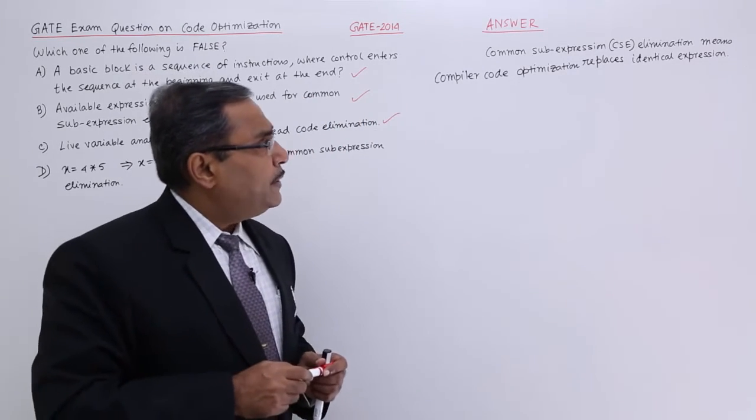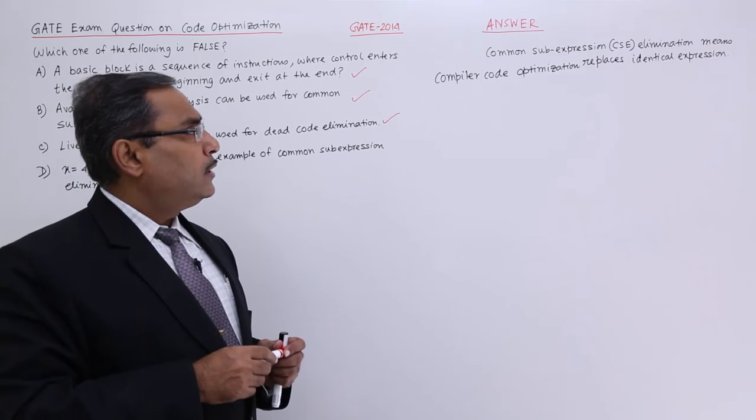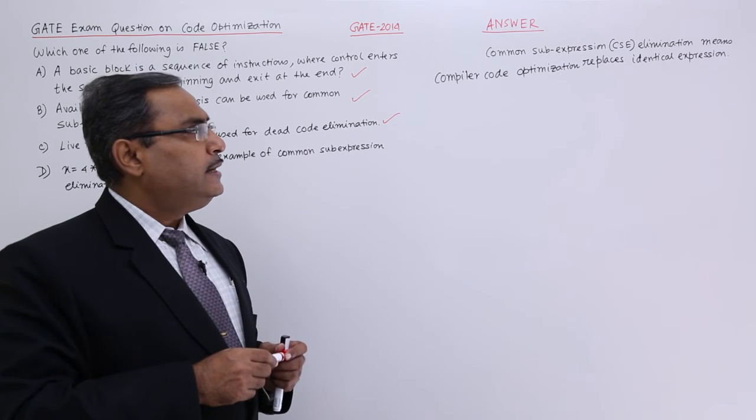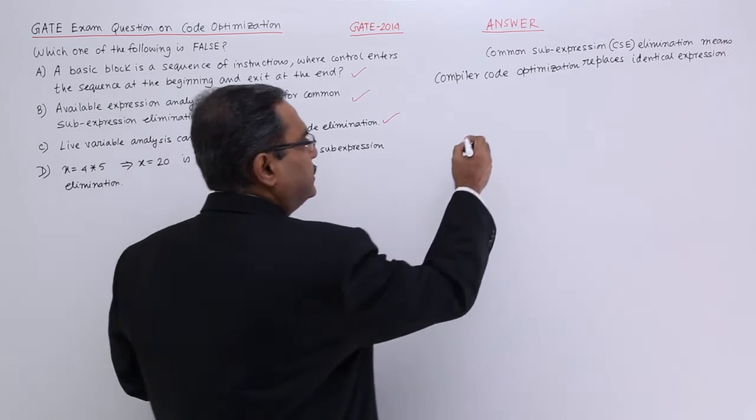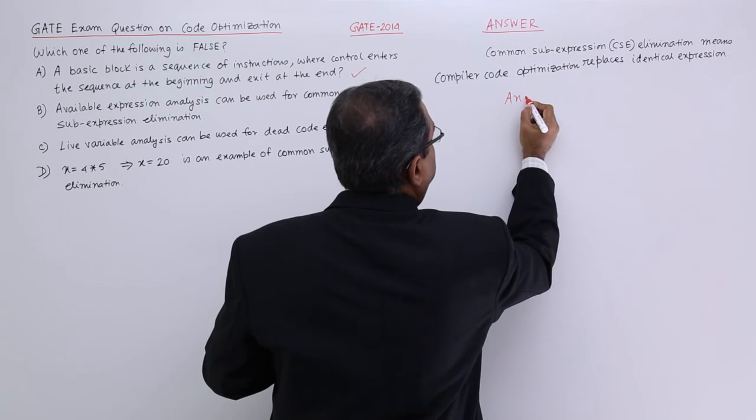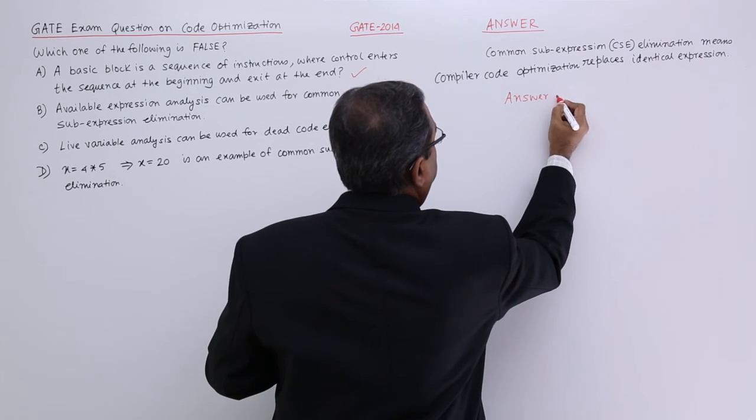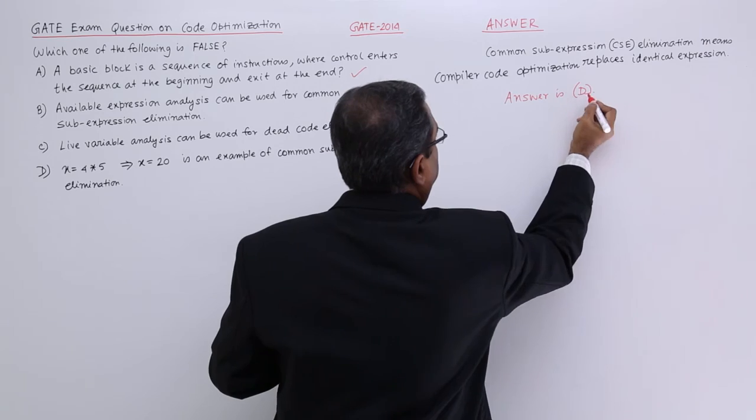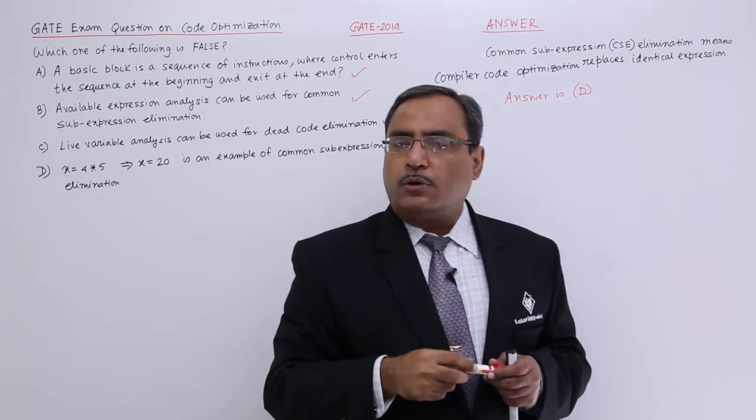You see, common sub expression elimination means compiler code optimization replaces identical expressions. So here the option, answer is D. So in this way this particular question can be solved.